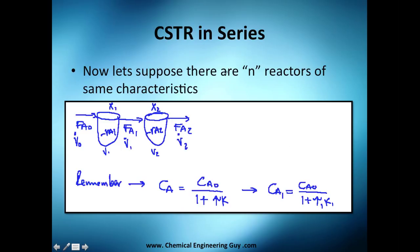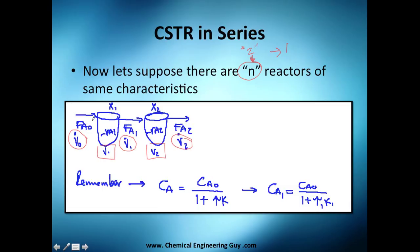Let's suppose there are N reactors. Before we said two, but now let's say N reactors — any number greater than one. They all have the same characteristics: the volumetric flow rate is equal across all reactors, and each volume is equal to the others.